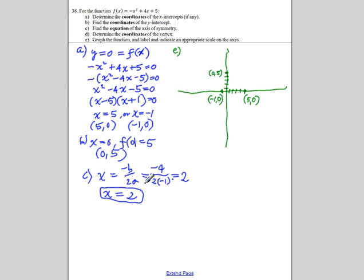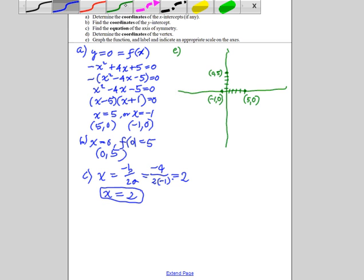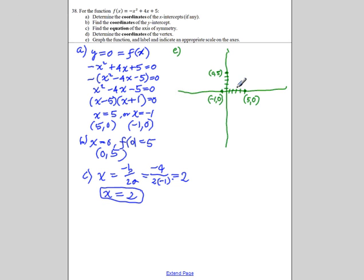We are now going to plot it on our graph. Now the vertical line x equals 2 is the axis of symmetry. And you can see that the x-intercepts are symmetrical to each other about the vertical line x equals 2. You see the point (5, 0) is 3 spaces to the right of the axis of symmetry. And the point (-1, 0) is also 3 spaces, but it is to the left of the axis of symmetry.